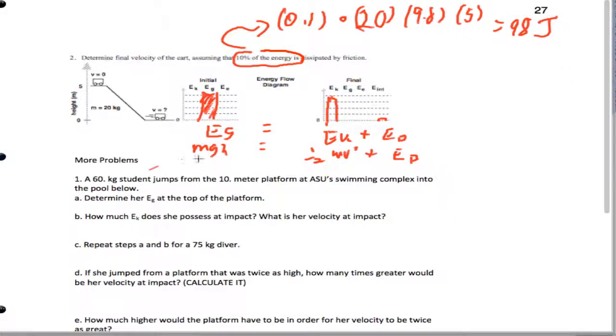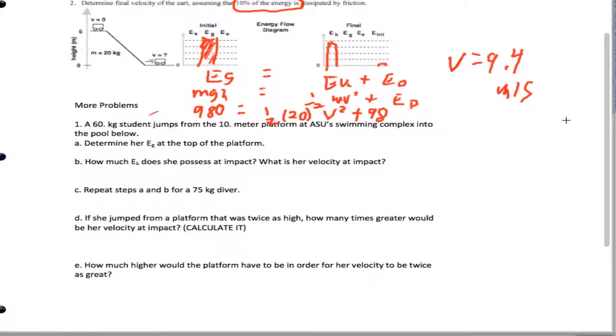Now when I calculate MGH, again, that's 980, equals 1/2 times m times v squared plus 98. When we solve for v, we're going to end up getting 9.4 meters per second. Good. Now, let's move on to these extra problems that we did.